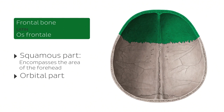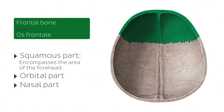The next part is the nasal part, which we also cannot see clearly from the calvaria. So from here we can mainly see the squamous part, which is the area that forms or defines your forehead.